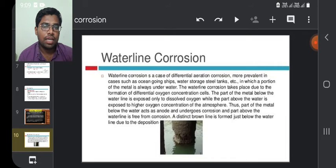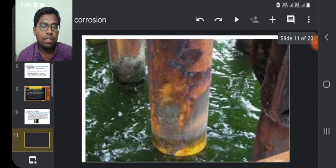The part of the metal below the waterline is exposed only to dissolved oxygen, while the part above the water is exposed to higher oxygen concentration of the atmosphere. Thus, part of the metal below the water acts as anode and undergoes corrosion, and part above the waterline is free from corrosion. A distinct brown line is formed just below the waterline due to deposition. Here are some photos of waterline corrosion.